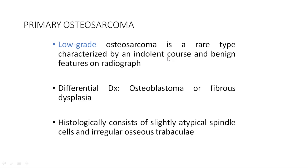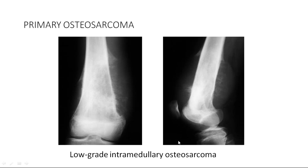Low-grade intramedullary osteosarcoma is a somewhat rare type. It looks benign but is malignant. The differential diagnosis includes osteoblastoma or fibrous dysplasia, as it looks similar. Histologically, compared with high-grade, there are atypical spindle cells and irregular osteoid present. In low-grade, the bone looks nearly normal with periosteal reaction present, but the tumor does not pierce the cortex or extend to the muscle — unlike high-grade where cortical breakage occurs.